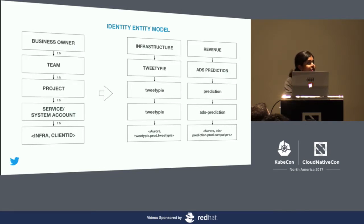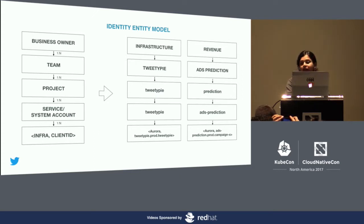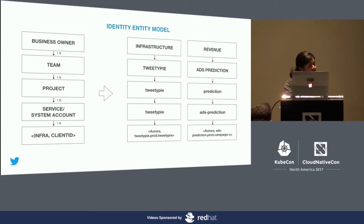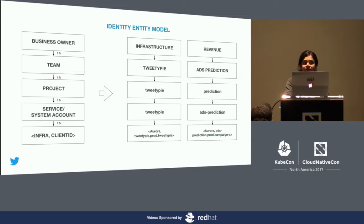Client identifiers are logically grouped as projects. Projects belong to a team, which in turn belongs to a cost center or department — essentially some entity that can be responsible for the dollars spent. Here is an example: Revenue is one of our cost centers and one of their teams is called Ads Prediction. That team owns several services, one of which is Prediction. Prediction runs under the service account Ads Prediction. A service can have multiple service accounts based on access control needs — for example, one for every different environment.